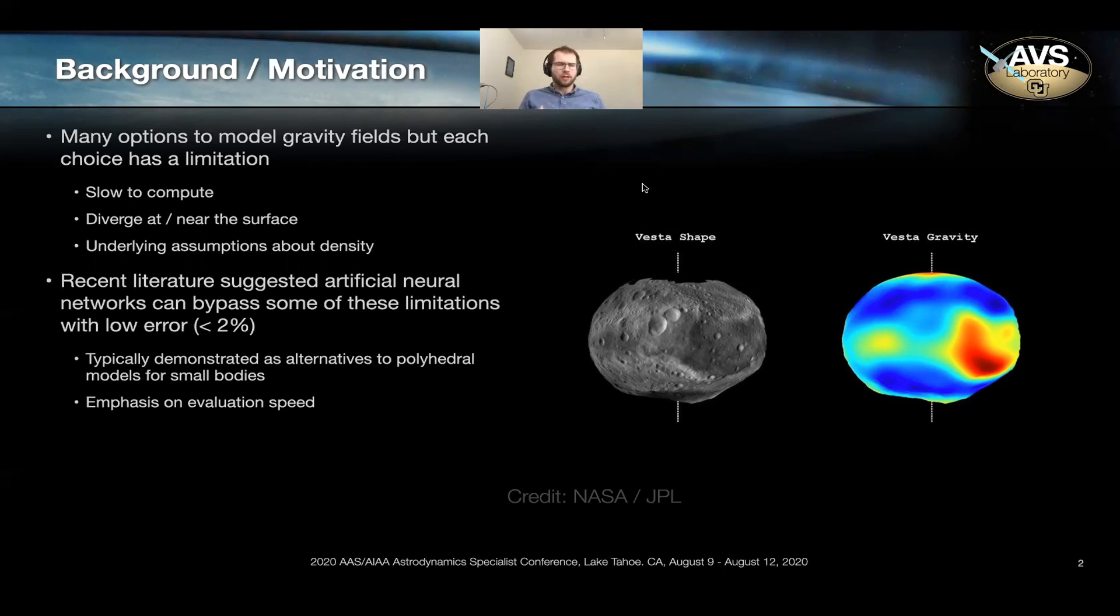And as I've scoured the literature for explanations or alternatives, I ran across one relatively new approach and that's to use artificial neural networks as a means to represent your gravity field. I found a collection of papers that suggested artificial neural networks are actually quite efficient at representing these fields and they take significantly less time to compute and can maintain relatively low error.